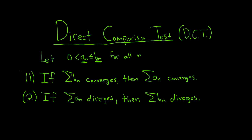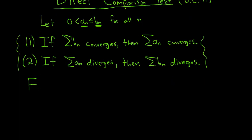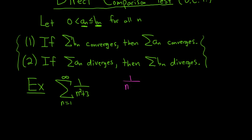So how do you use it? Let's do an example. We're trying to determine whether the infinite sum from n=1 to infinity of 1/(n²+3) converges or diverges. When n is really big, the 3 is negligible — you only care about the highest order term. So this is essentially like 1/n². The sum of 1/n² is a p-series that converges because p=2, which is greater than 1. So we expect convergence.